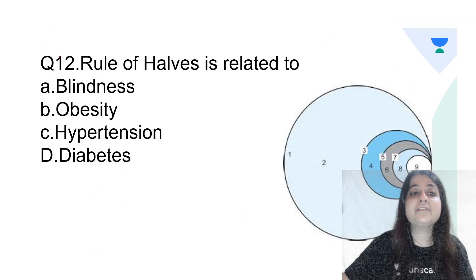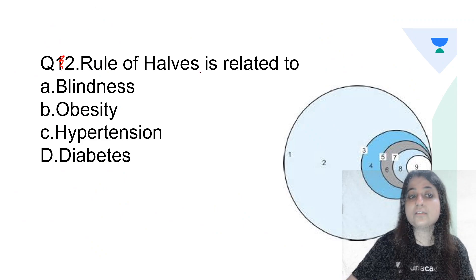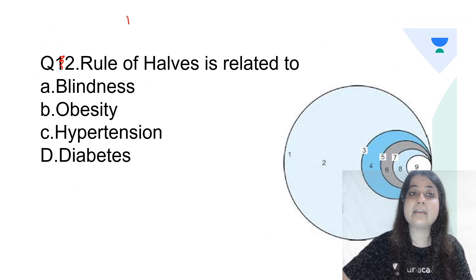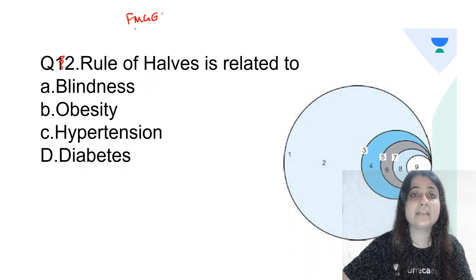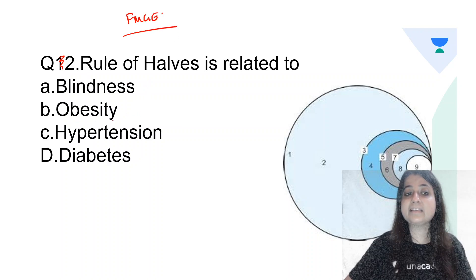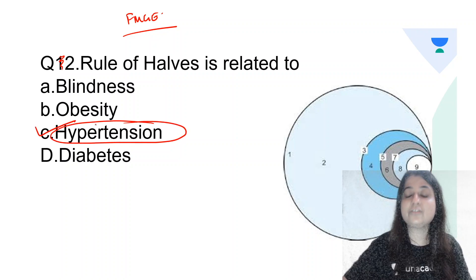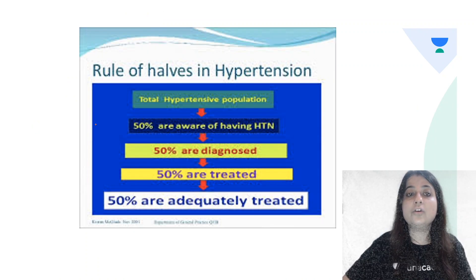Next question: Rule of halves is for — blindness, obesity, hypertension, or diabetes? It is for hypertension. This is an important FMG question; it can come in INICET also.